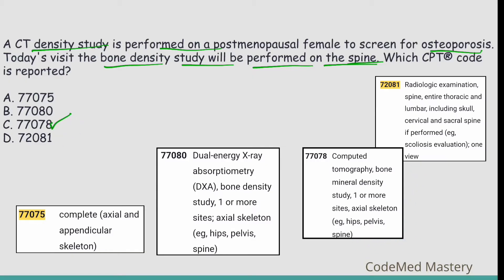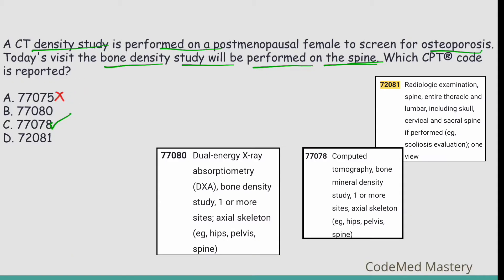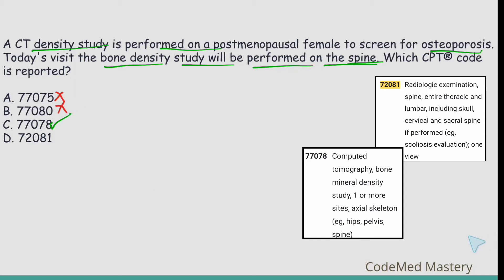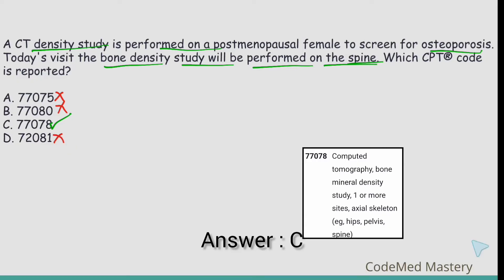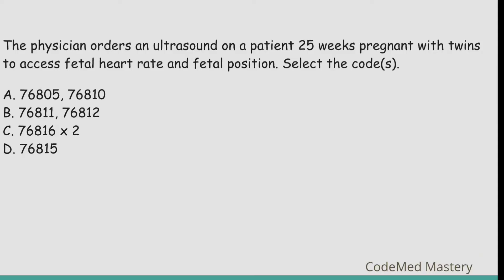We eliminate option A, 77075, because that is for radiologic examination skeletal survey, complete — not matching. Option B, 77080, is for dual energy x-ray absorptiometry (DXA) bone density, but in the question they are performing CT density, so directly eliminate option B. Option D, 72081, is for radiologic examination spine entire, thoracic and lumbar — not matching. Eliminate option D. The right answer is option C.